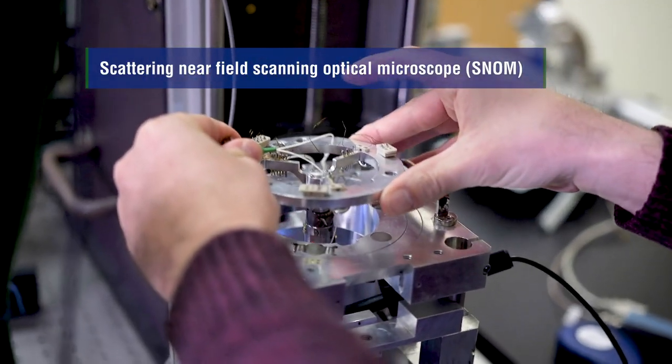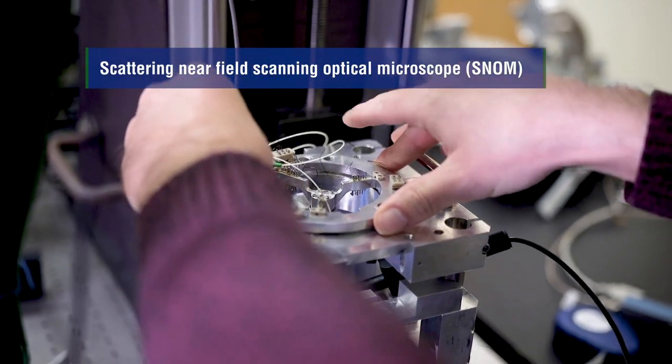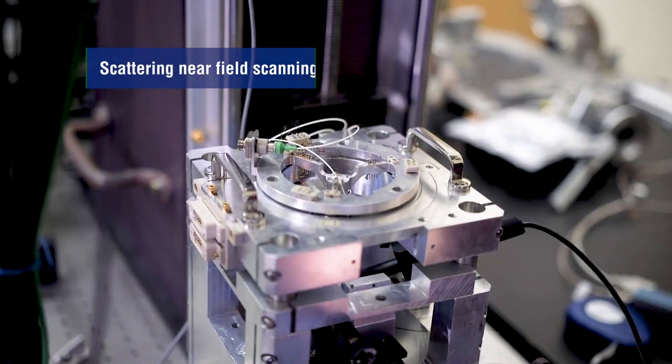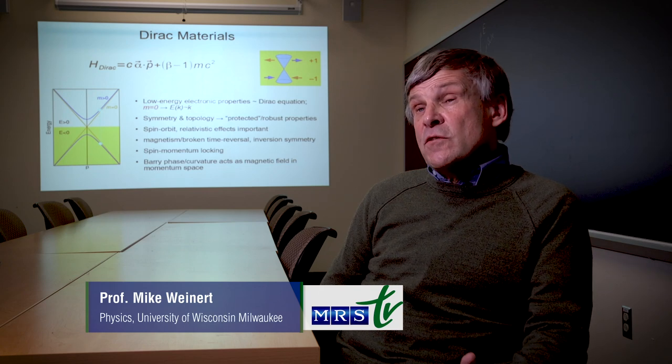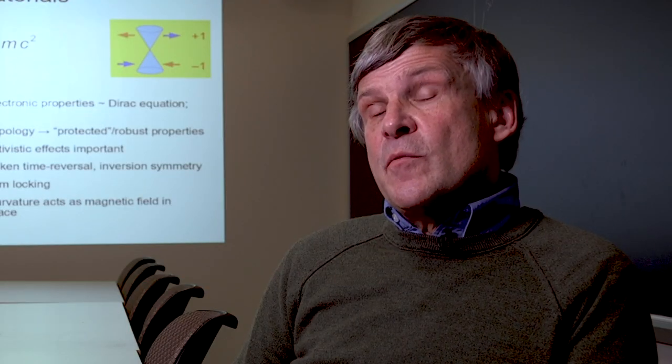Here at West Virginia University, we're investigating the application of Dirac materials to break reciprocity. Dirac materials are materials with electronic properties that look like a Dirac equation, so relativistic, near the Fermi level.